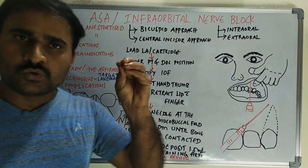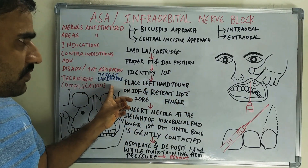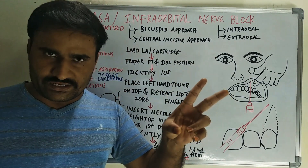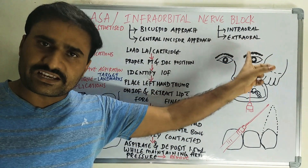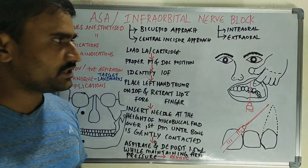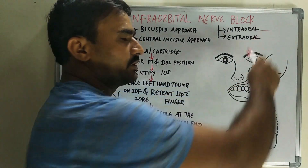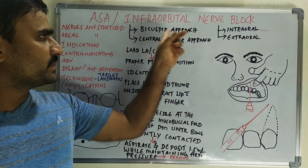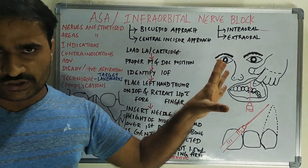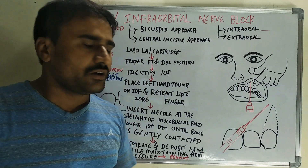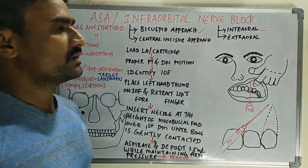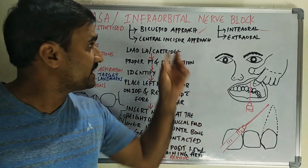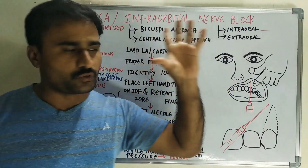Regarding technique, you have to identify targets and landmarks. There are mainly two techniques: intraoral and extraoral. We commonly use only the intraoral technique. Within intraoral, there are two approaches: bicuspid approach or central incisor approach. We commonly use the bicuspid approach.